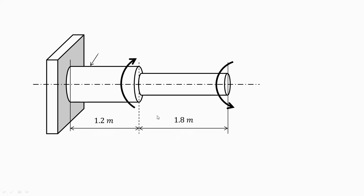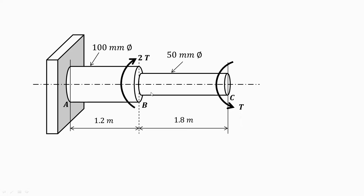As you can see, the two shafts are of different diameters — shaft AB is of 100 mm diameter and shaft BC is of 50 mm diameter. Length of shaft AB is 1.2 m whereas length of shaft BC is 1.8 m. The important part is that point C is subjected to an anti-clockwise torque of T, whereas at point B it is subjected to a clockwise torque of 2T.